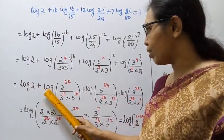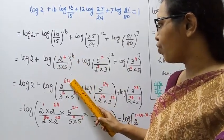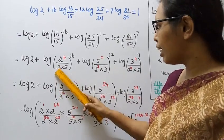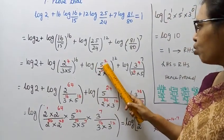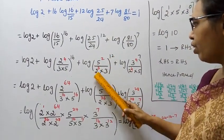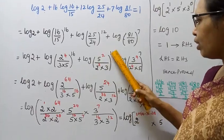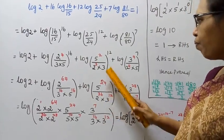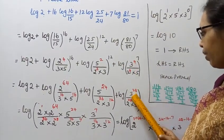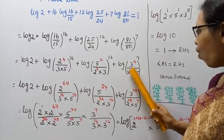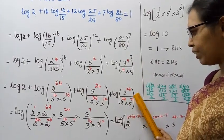Now log 2 plus log — multiplying powers through: 2 power (4 into 16) = 2 power 64; denominator 3 power 16 into 5 power 16. Plus log 5 power (2 into 12) = 5 power 24; denominator 2 power (3 into 12) = 2 power 36, into 3 power 12. Plus log: 3 power (4 into 7) = 3 power 28; denominator 2 power (4 into 7) = 2 power 28 into 5 power 7.